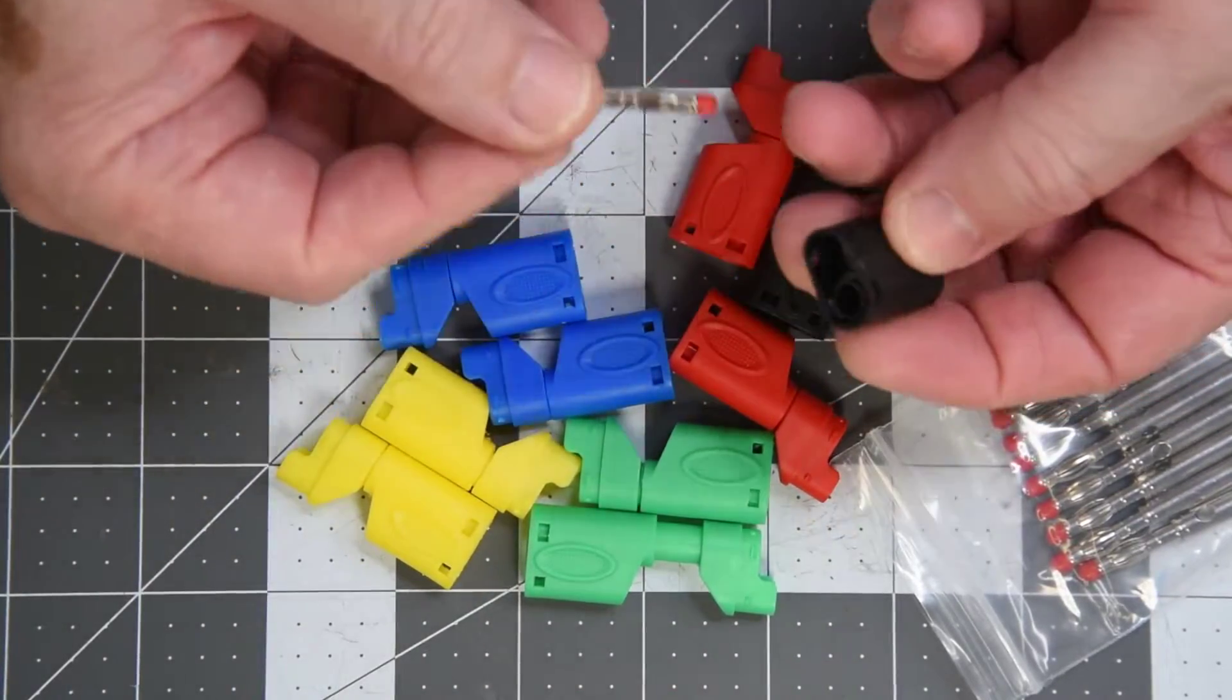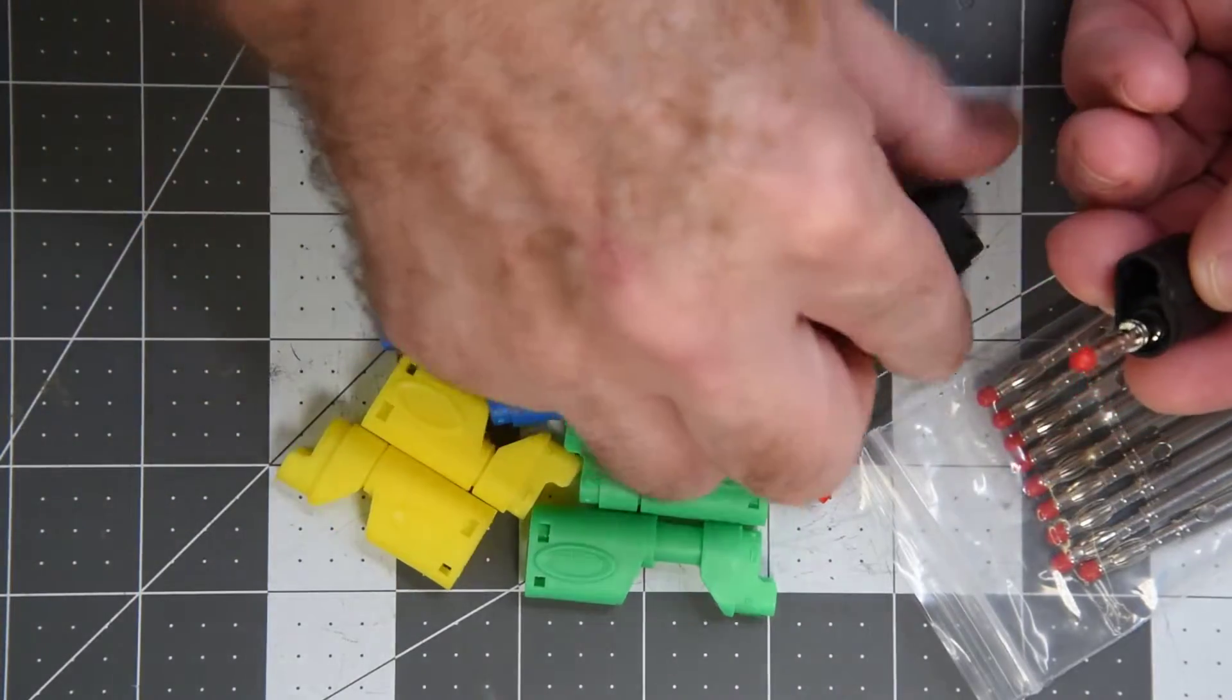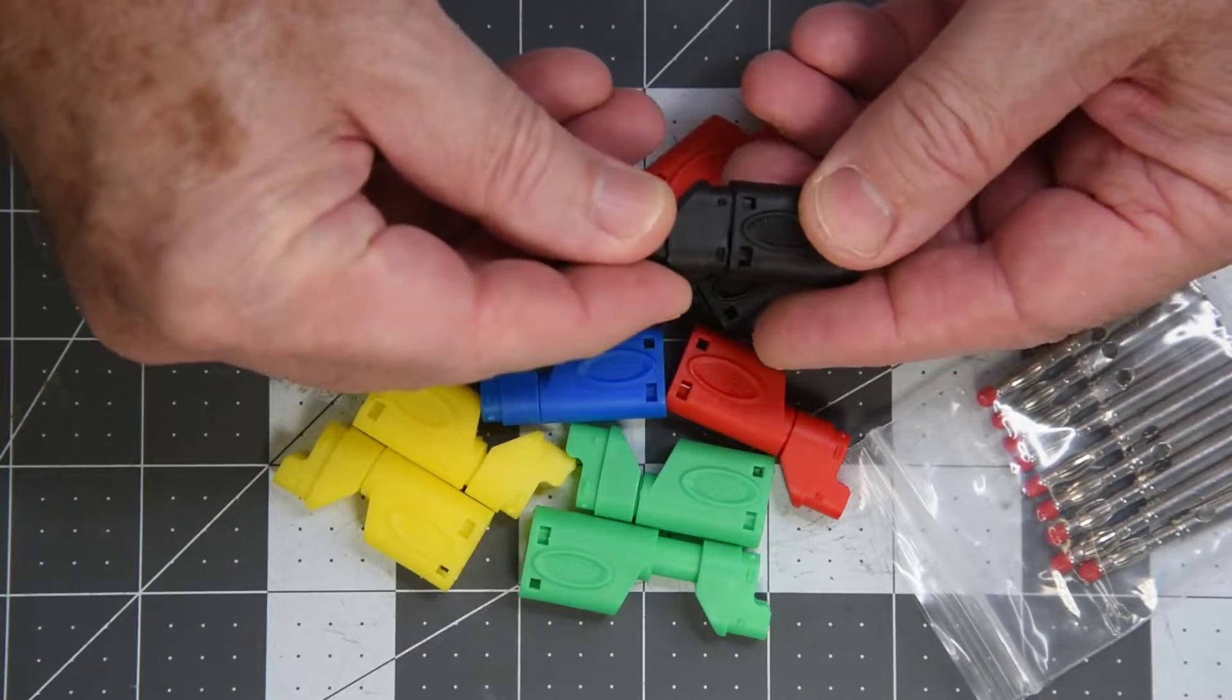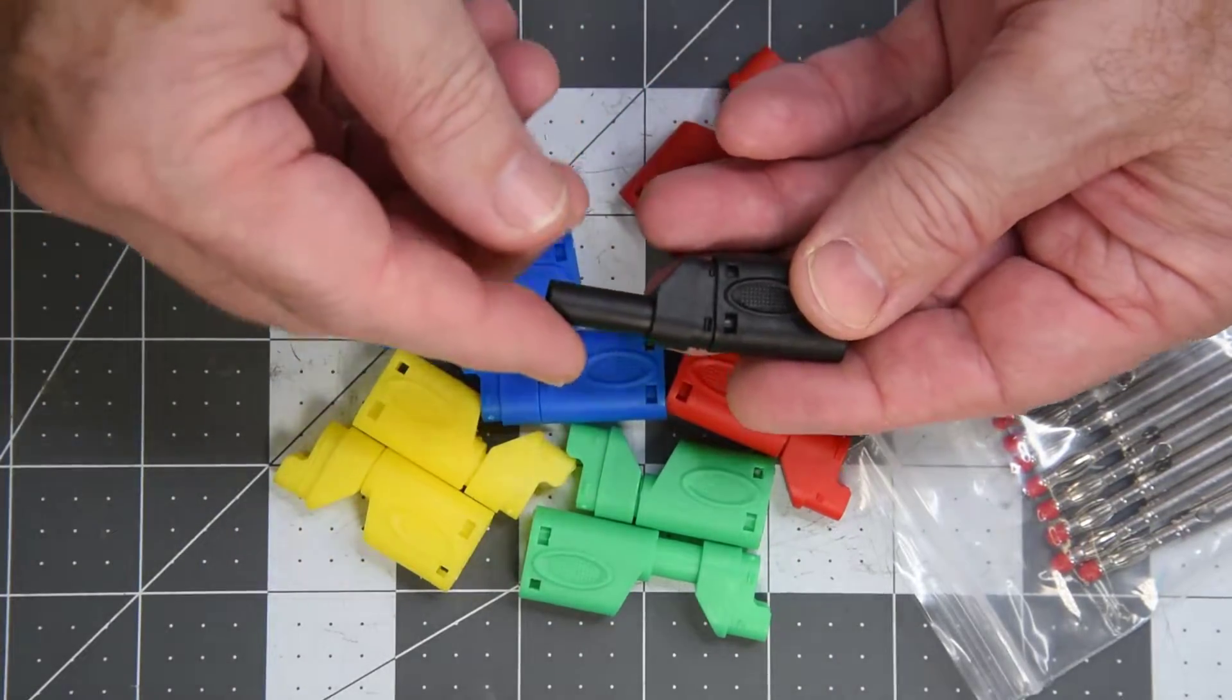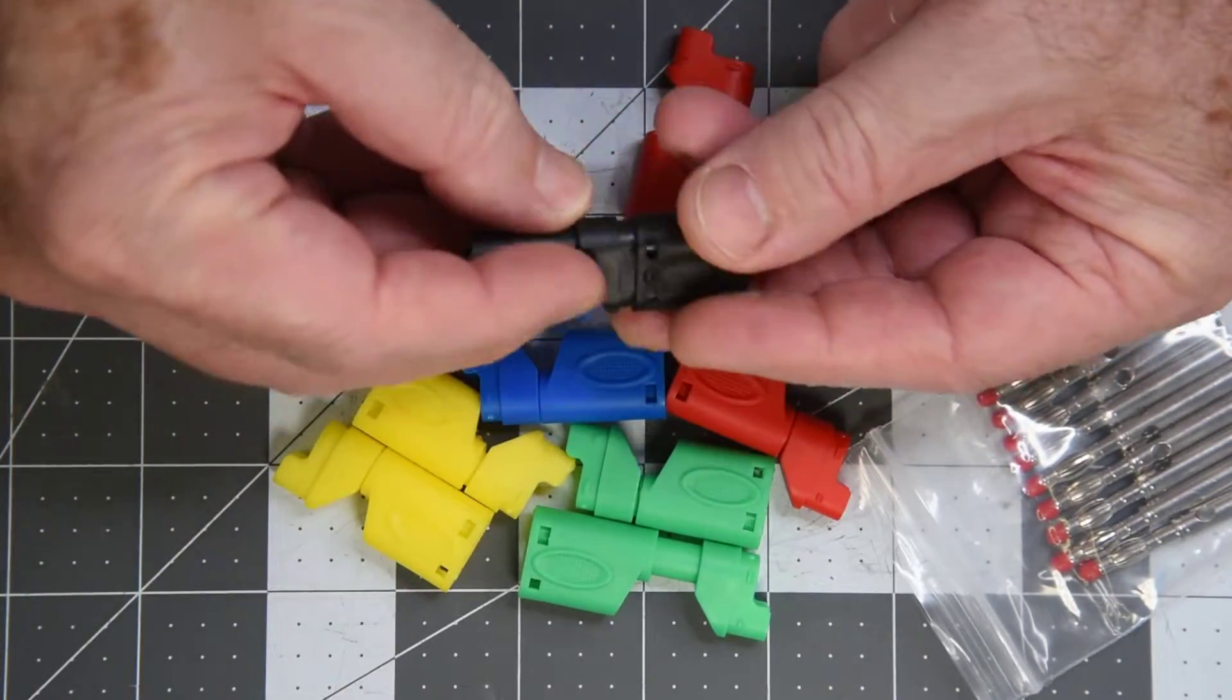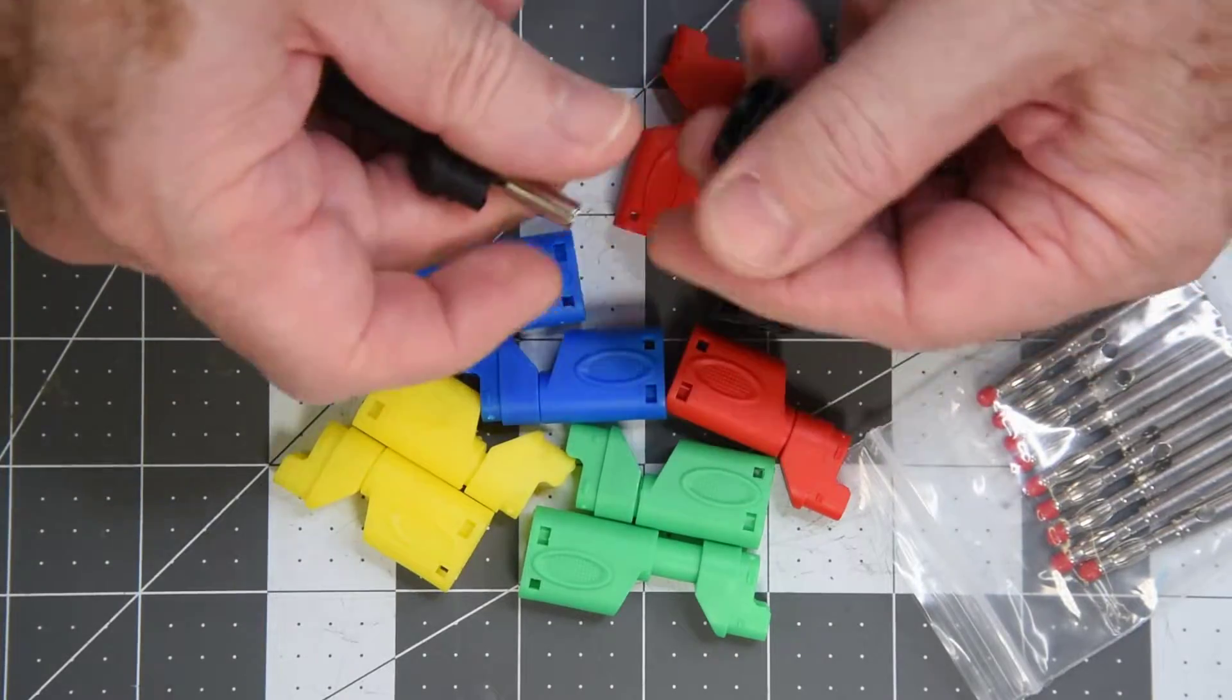The shells are reasonably thick and are supposed to be nylon. The plug is a nice solid fit in the shell. Nicely formed tabs on the shell, they snap together to form a solid feeling plug. They're not going to come apart in normal use.